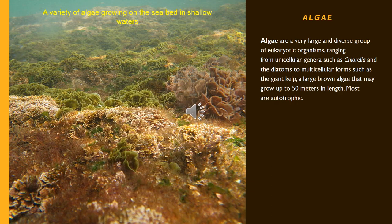Algae are a very large and diverse group of eukaryotic organisms ranging from unicellular genera such as chlorella and the diatoms to multicellular forms such as giant kelp, a large brown algae that may grow up to 50 meters in length. Most are autotrophic.